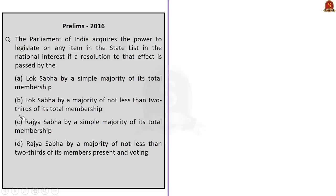The correct answer is option D — Rajya Sabha by a majority of not less than two-thirds of its members present and voting, that is a special majority. If Rajya Sabha approves a resolution with special majority and declares that the subject is of national interest, Parliament can legislate on the particular subject in the State List. This question is directly asked from Lakshmikant, so aspirants should seek maximum opportunity from these questions.